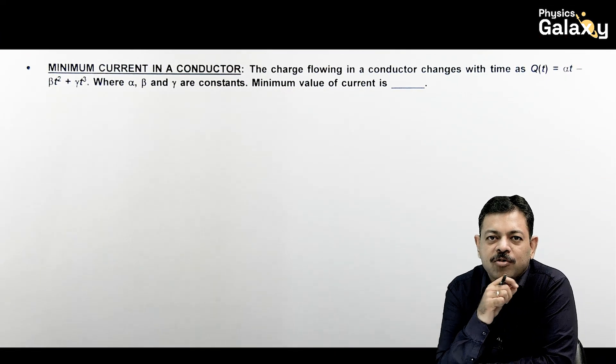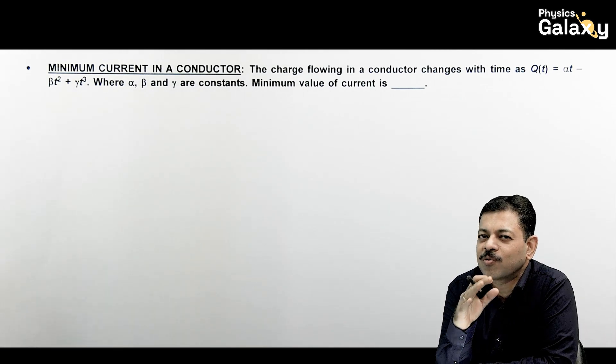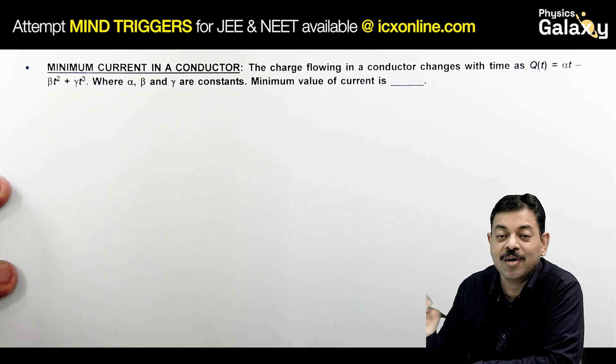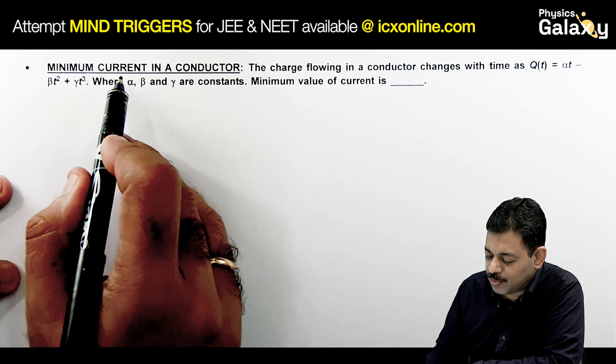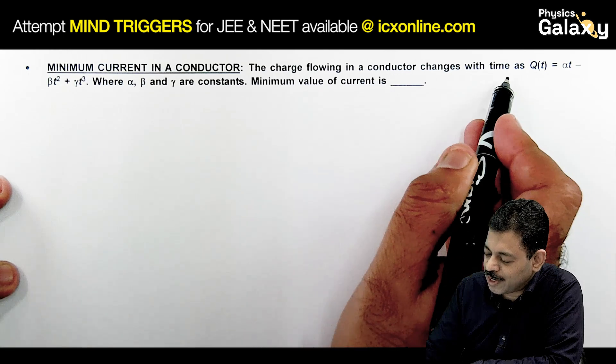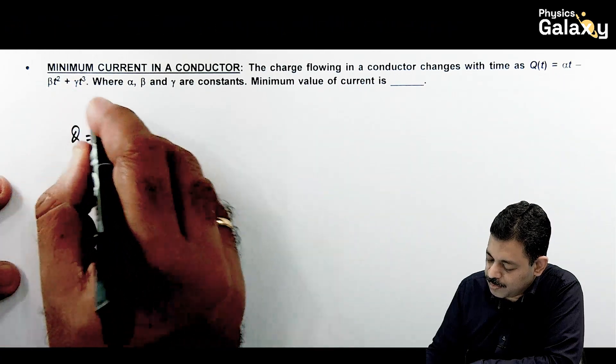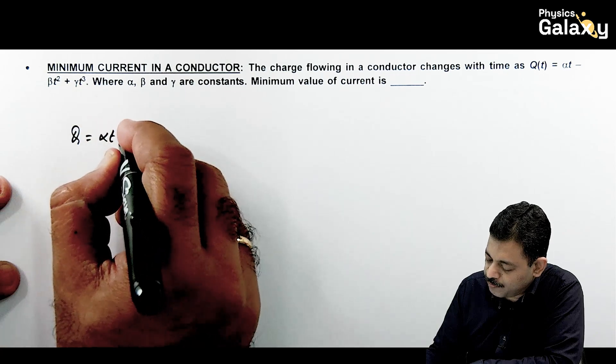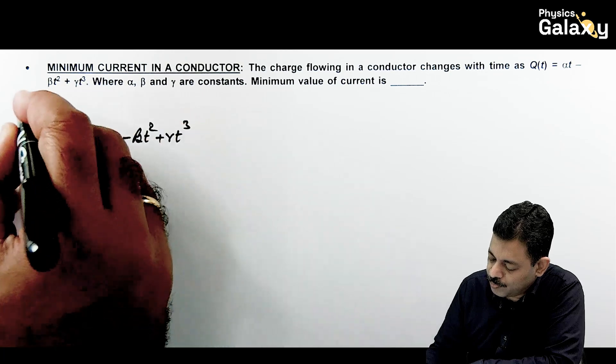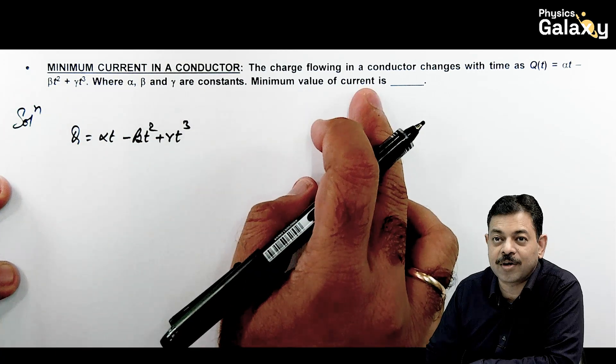There is one more case where charge and current are related. These questions are also frequently asked in JEE Main. Here it is asking minimum current in a conductor. It says the charge flowing in a conductor changes with time as q = αt - βt² + γt³. Here this is the value of charge as a function of time. We are required to calculate the minimum value of current.